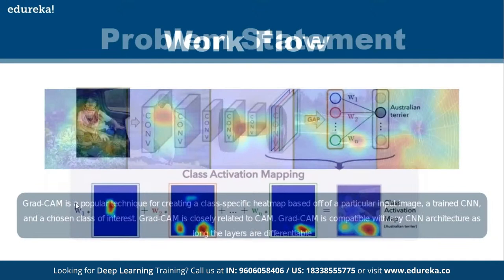The class activation map takes the last convolution layer output from the CNN and passes it to Grad-CAM. Here, for a dog image, the algorithm comes to a confirmation that it's an Australian Terrier — but on what feature is it basing that? Grad-CAM will help. You can see first it highlights one area, then in another round it identifies an object and a dog, and finally highlights the specific portion — that is how it identified it.